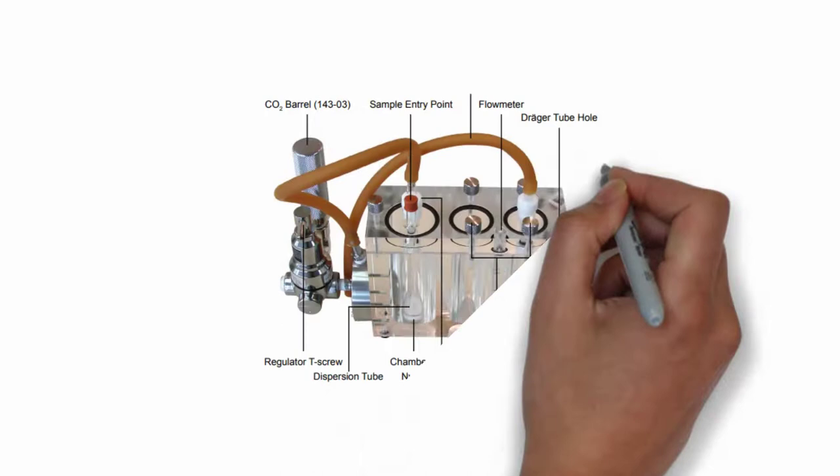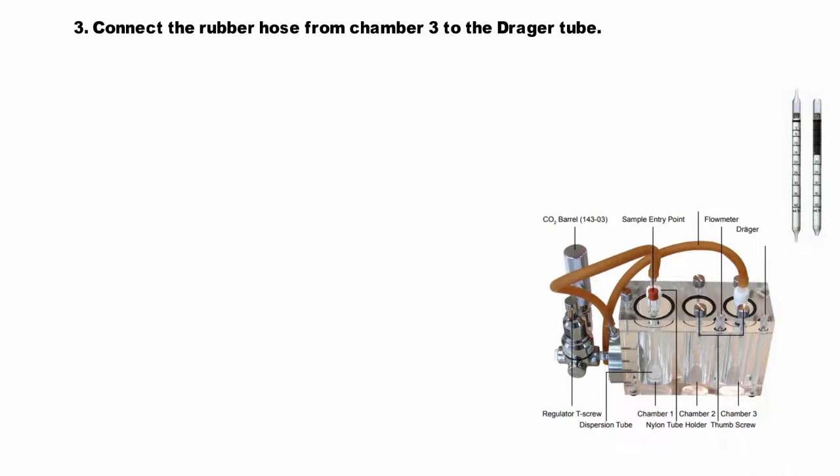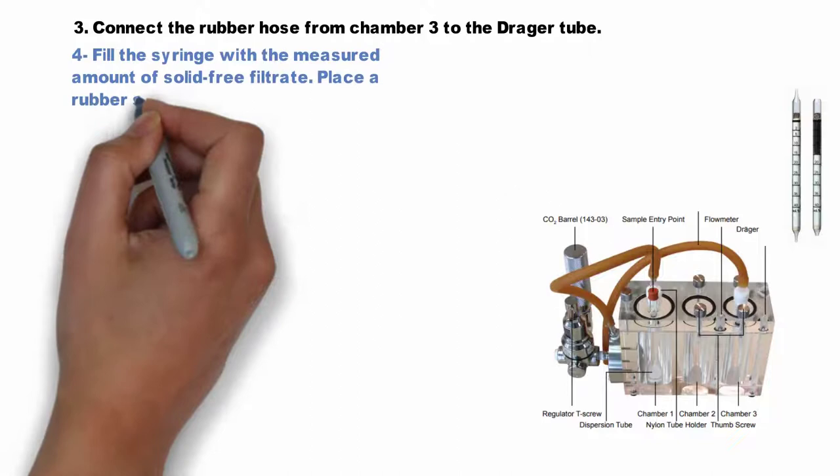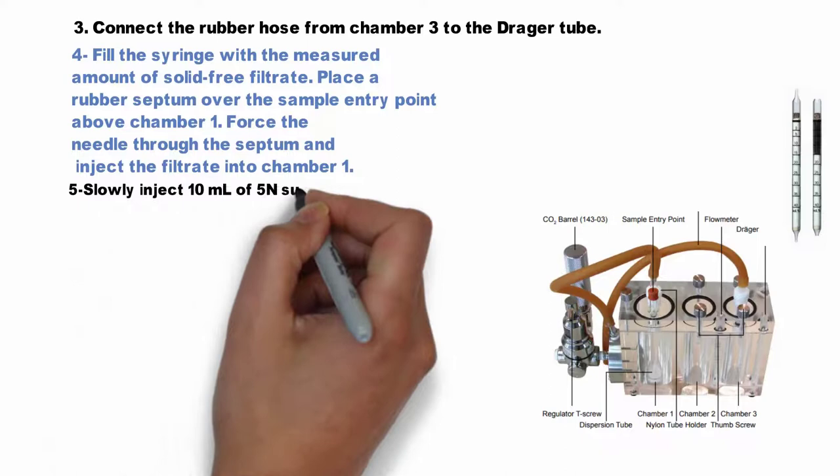Fill the syringe with the measured amount of solid-free filtrate and place the rubber septum over the sample entry point above chamber 1. Force the needle through the septum and inject the filtrate into chamber 1. Then slowly inject 10 ml of 5-normal sulfuric acid solution into chamber 1 through the rubber septum using the syringe and needle.